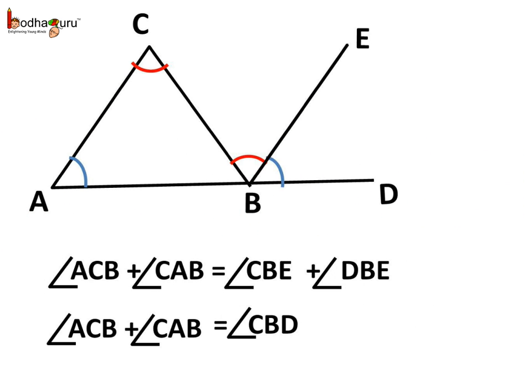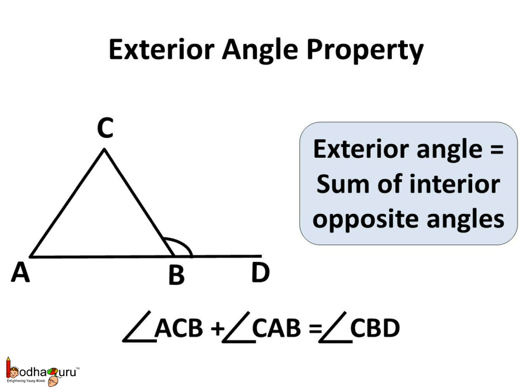So now we can say: angle ACB plus angle CAB is equal to angle CBE plus angle DBE. Now, angle CBE and angle DBE together make the exterior angle CBD. So we can say the exterior angle CBD is equal to the sum of the interior opposite angles. Remember children: any exterior angle of a triangle is equal to the sum of the interior opposite angles, and this is known as the exterior angle property of a triangle.